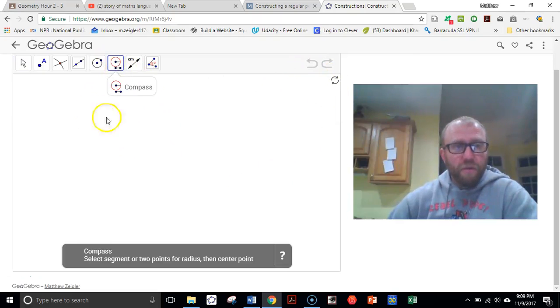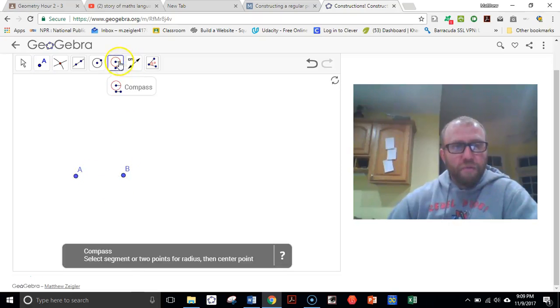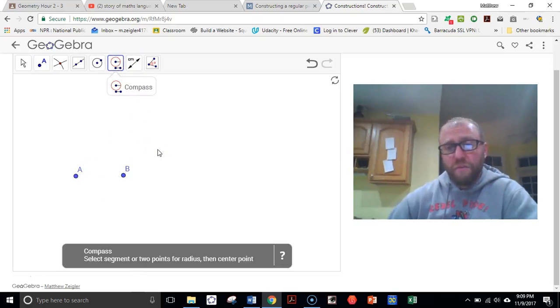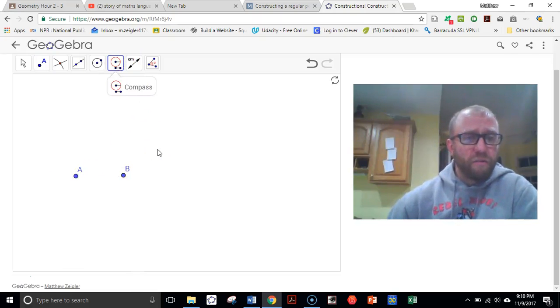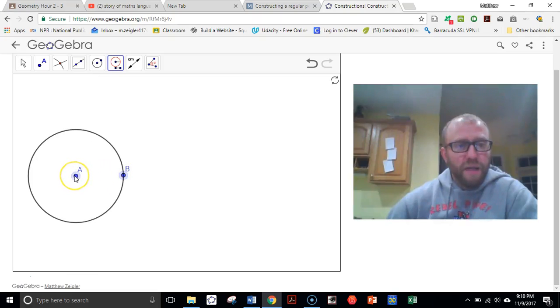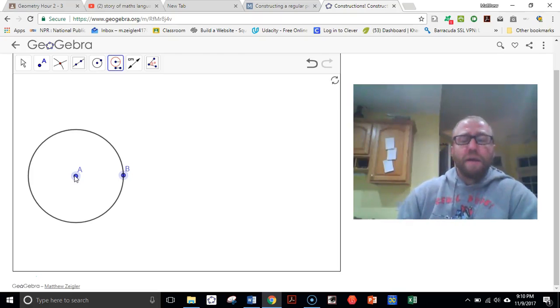The compass tool on the other hand, actually let's start with a couple of points here. Our compass tool measures the distance between two pairs of points and allows us to recreate that distance elsewhere. So I can mark the distance from B to A and it creates a circle that has radius AB. Notice that the circle appears with the center on the second point you click, not the first point like it does with the regular circle tool.